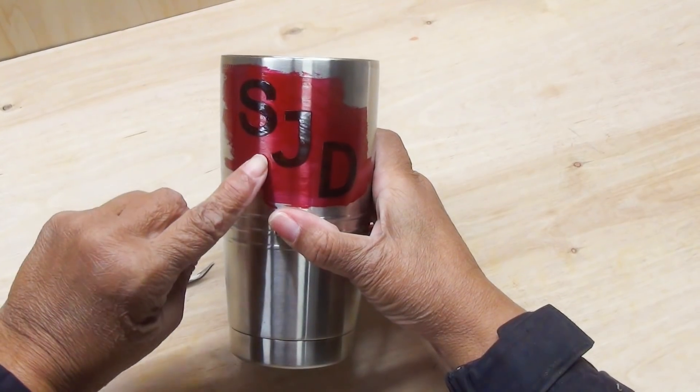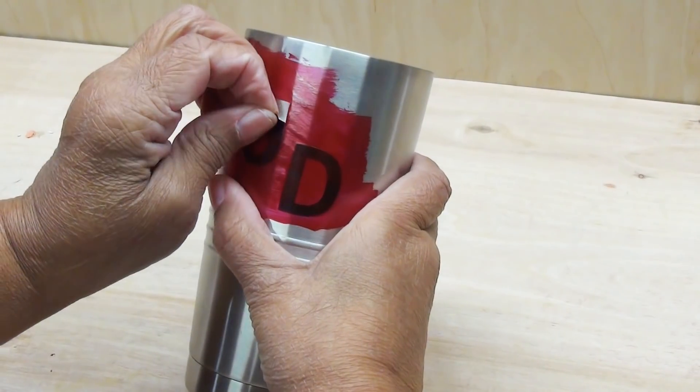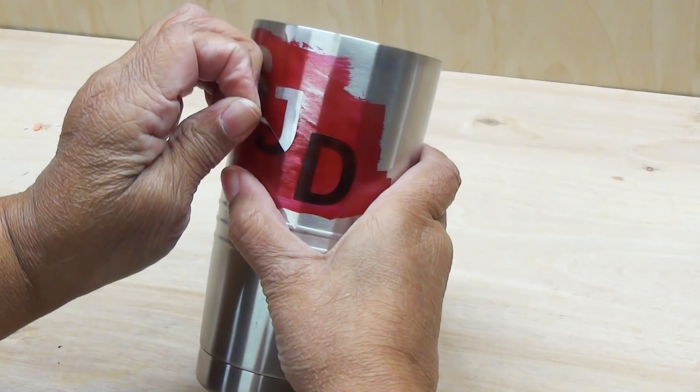Now my fingernail polish, which is my resist, it is set. Now I've just got to peel these vinyl letters out to create a stencil.